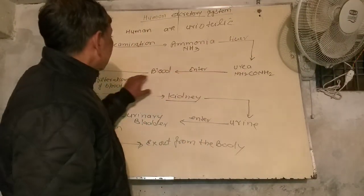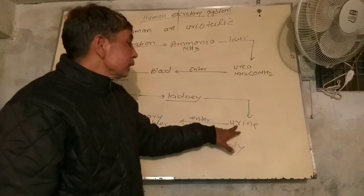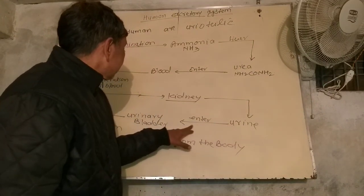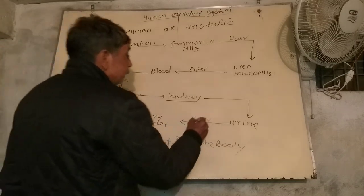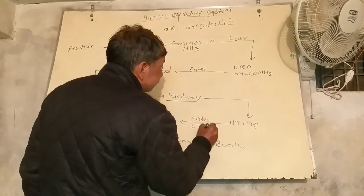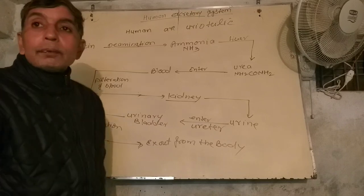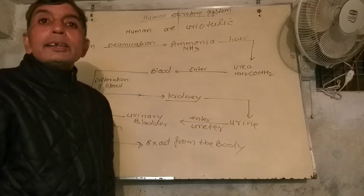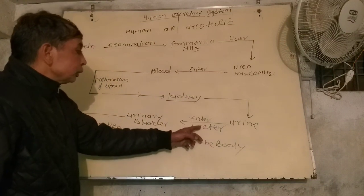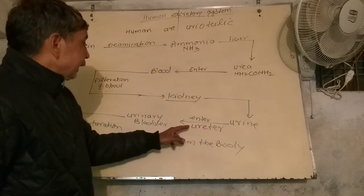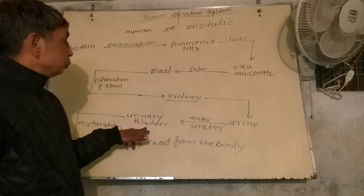The kidney filters the urea and makes urine. This urine enters through the ureter. The ureter is the tubule that links the urinary bladder to the kidney. Two ureters commonly open into the urinary bladder.